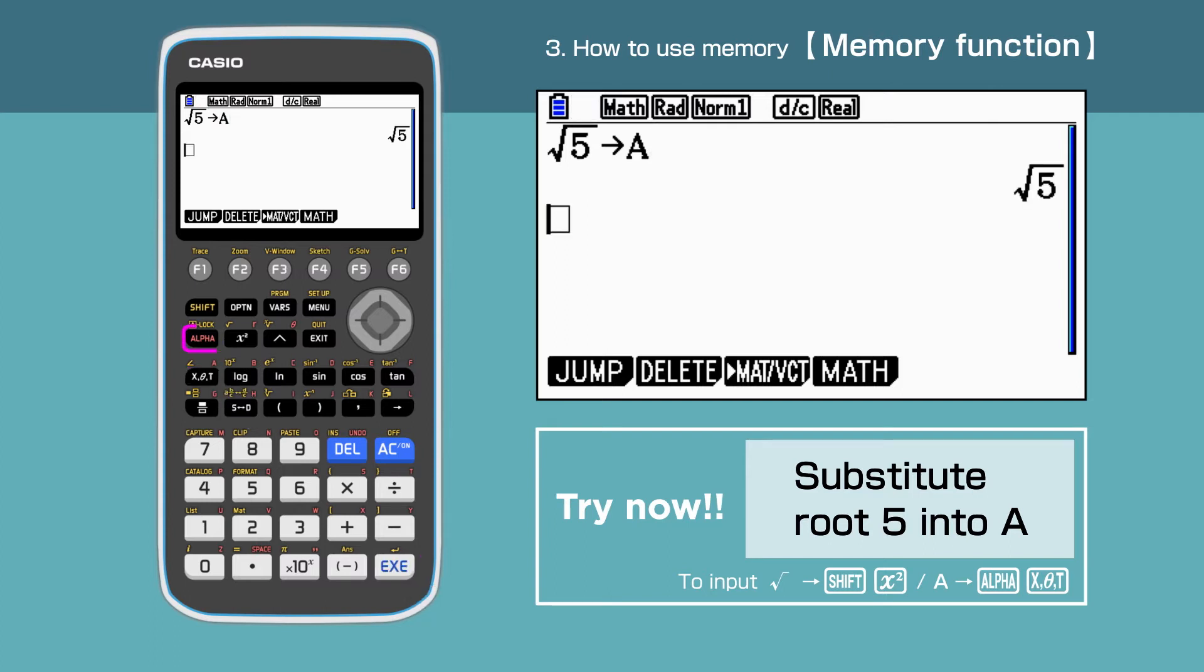Remember to press the Alpha key before entering symbols shown in red. To select the root in yellow above the X2 key, we will have to first enter Shift.